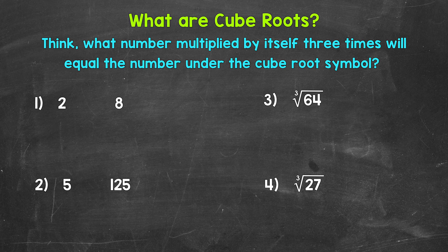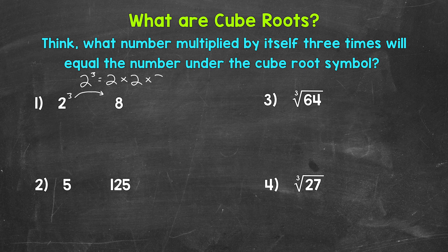Let's jump into number 1, where we have a 2 and an 8. In order to understand cube roots, we're going to start by looking at cubing a number, which means we have an exponent of 3. For example, let's start with 2 cubed — 2 with an exponent of 3. This means 2 times 2 times 2, which equals 8. So 2 cubed equals 8. 2 times 2 equals 4, times 2 equals 8.